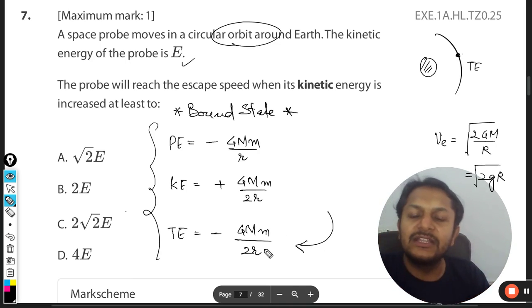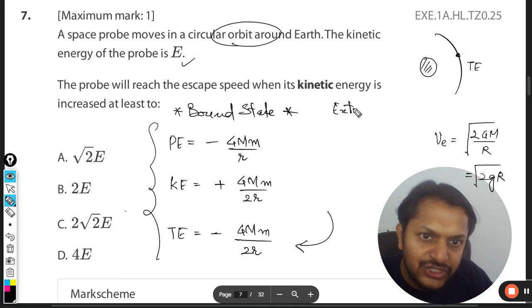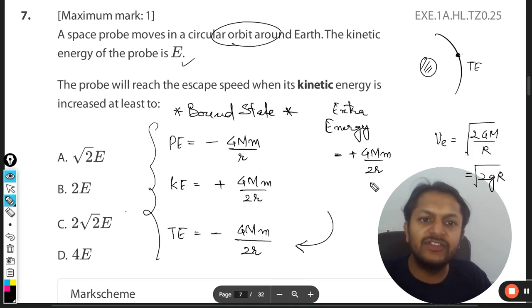Now we have to give some more surplus energy that will be given to this so that the total energy becomes zero. It means the extra energy that must be given to it, that should be equal to the same amount. It will be positive GMm by 2R. If the same energy is given, the total energy is already this negative. It's kind of negative, you can say.